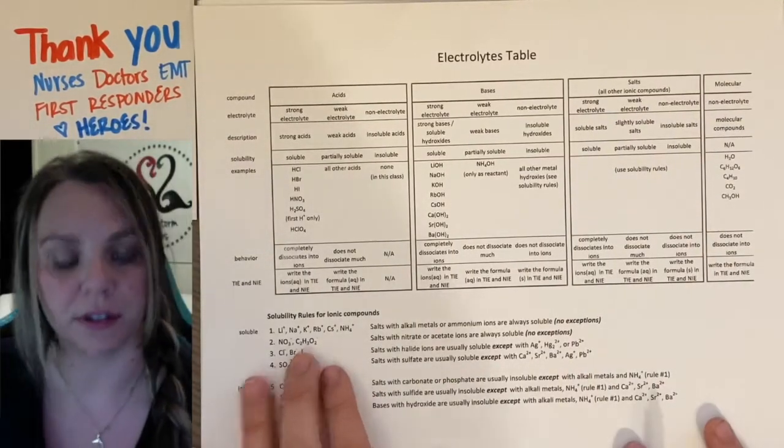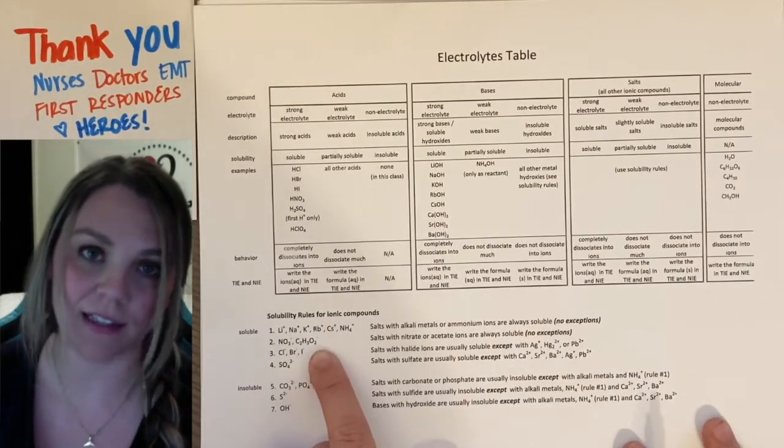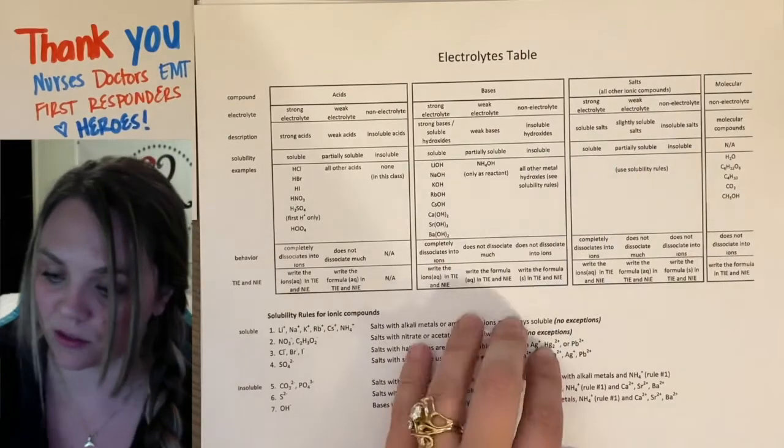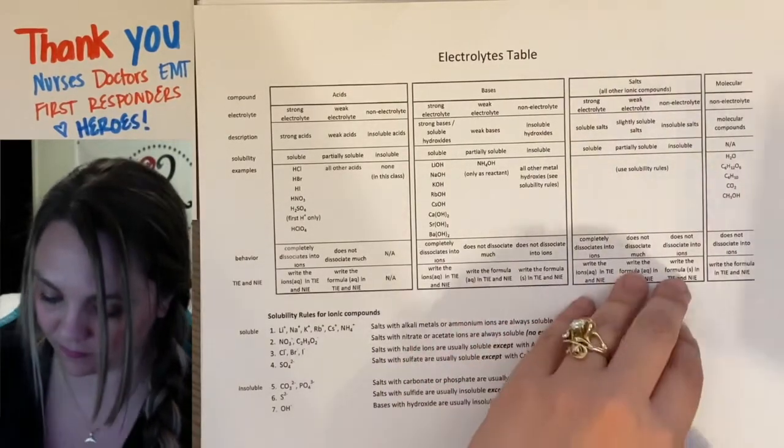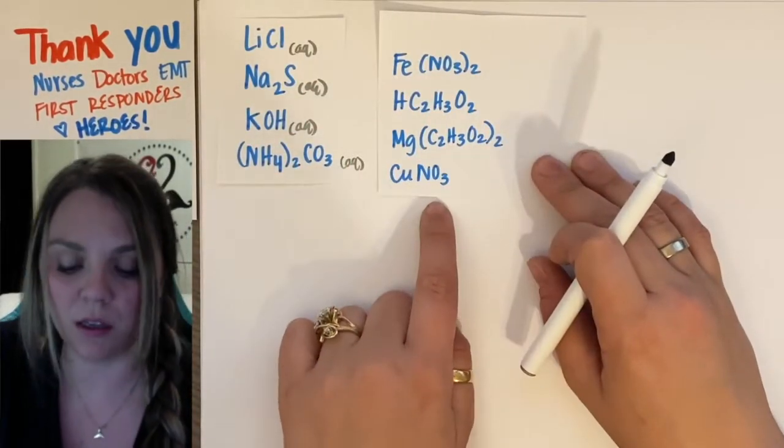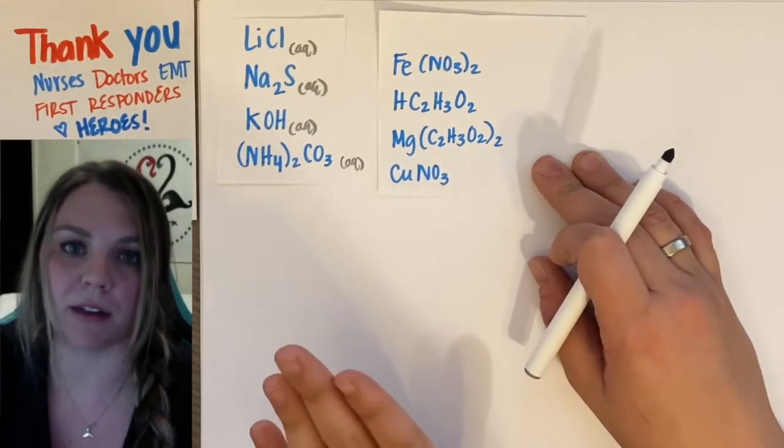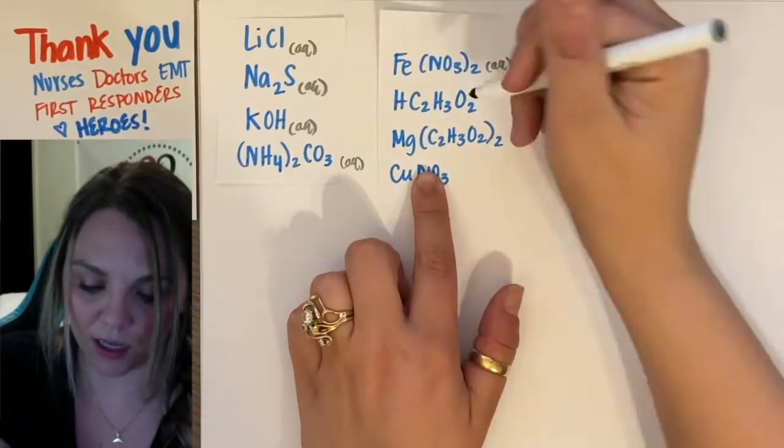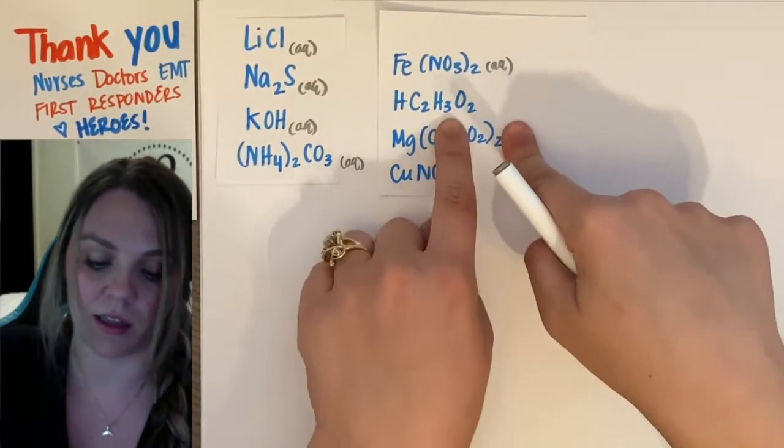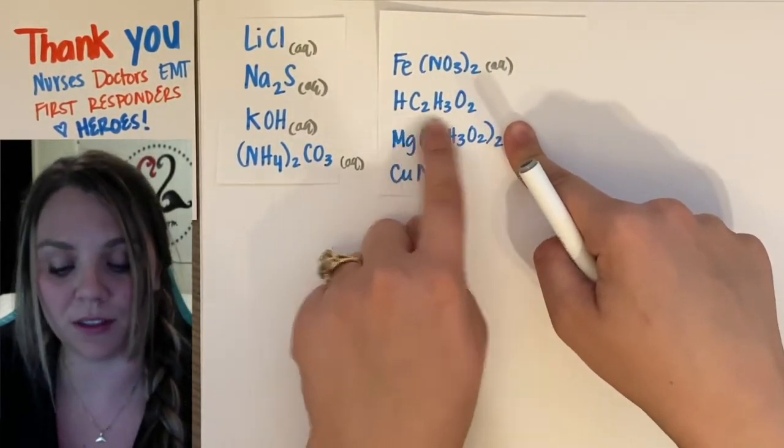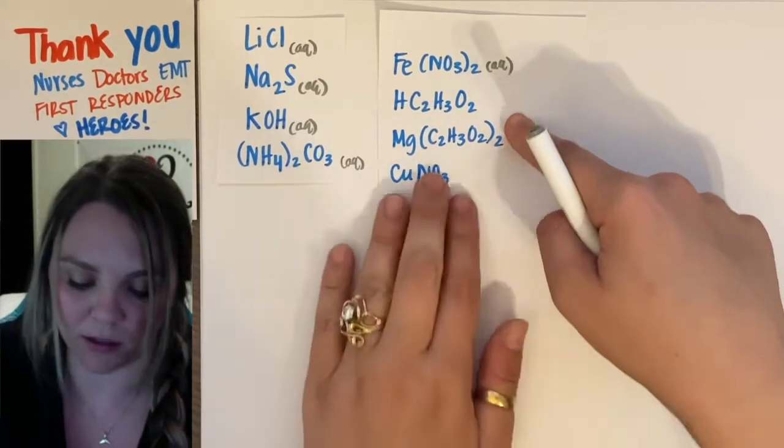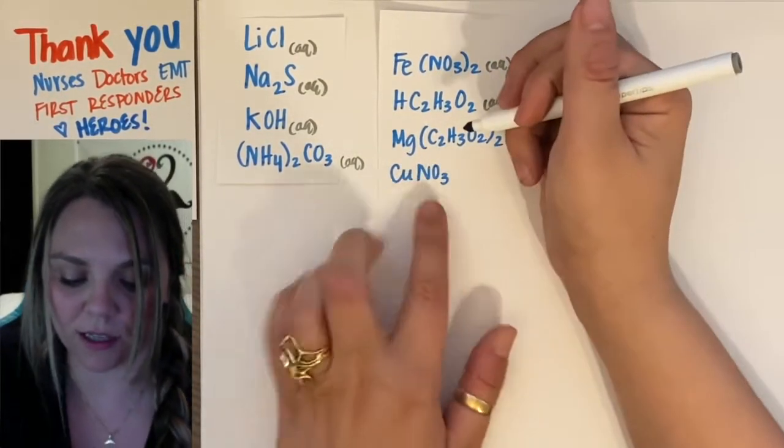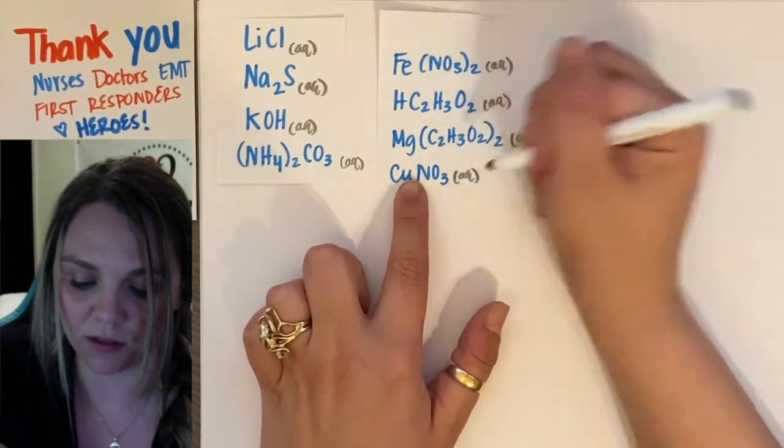Rule two. Also very easy. Nitrates and acetates. Always soluble. No exceptions. So, here's rule two. Nitrates and acetates does not matter what they're bonded to. They're always going to be aqueous. You see a nitrate? Aqueous. See an acetate? This is even an acetate bonded to an H. So, this is acetic acid. Doesn't matter. Aqueous. You see acetate, boom. You see nitrate, AQ.